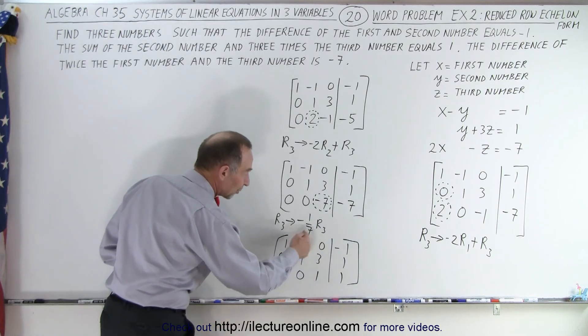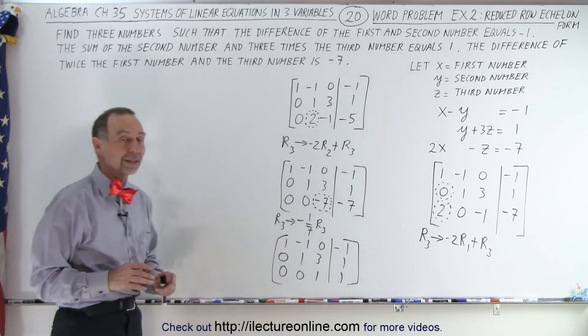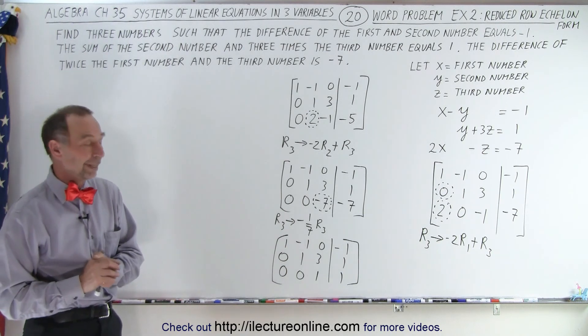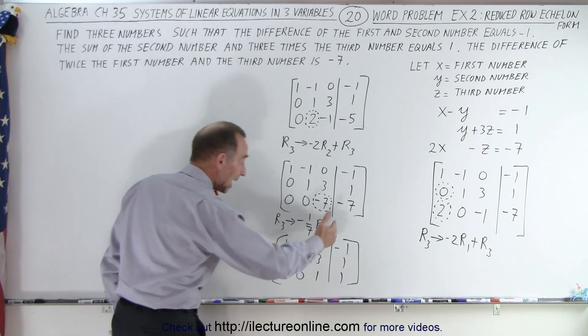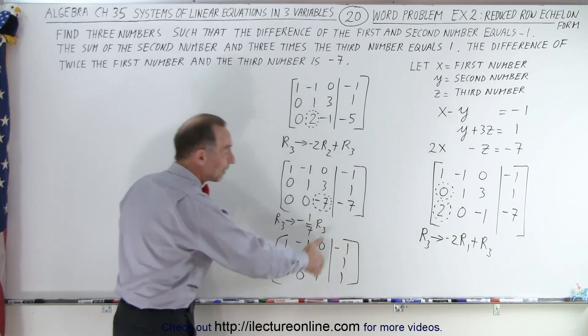We're also going to turn these three into zeros as well. That's called the reduced row echelon form. And then we can just simply read x, y, and z to the right of that vertical line.